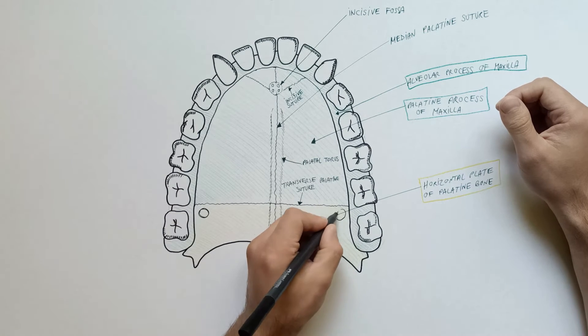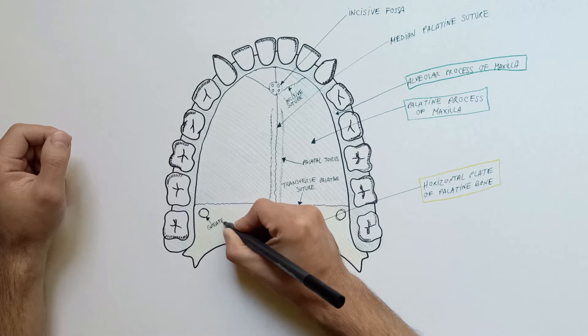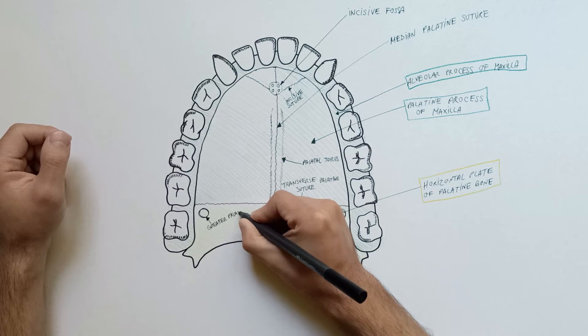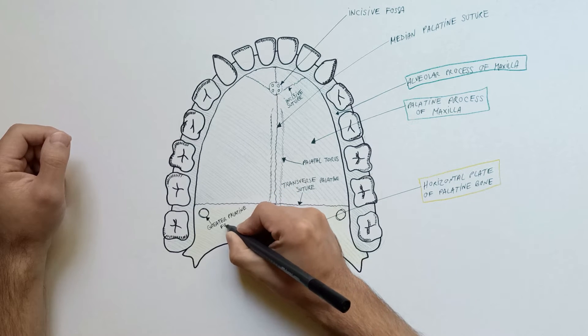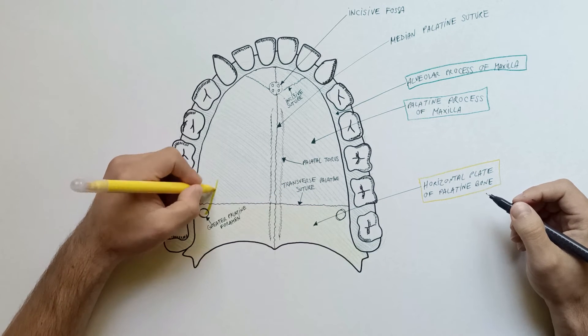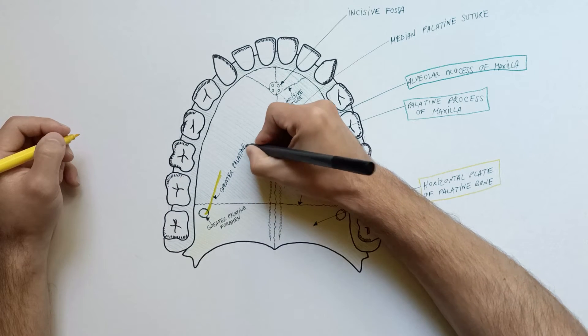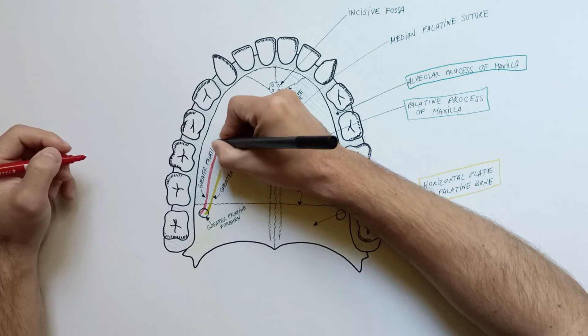The greater palatine foramen lies behind the transverse palatine suture and medial to the last molar tooth. This foramen transmits the greater palatine nerve and the greater palatine artery and vein.